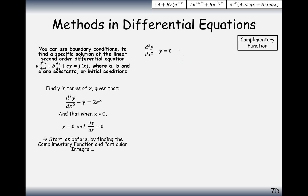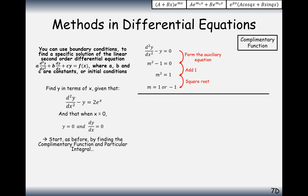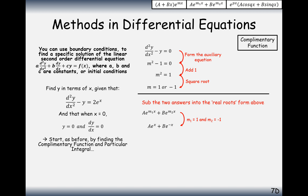Start with the complementary function — go to the auxiliary equation first, solve it, and we get roots 1 and minus 1. So the complementary function is the bog-standard real form with two different roots: Ae to the x plus Be to the minus x.